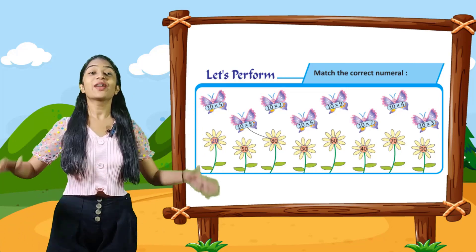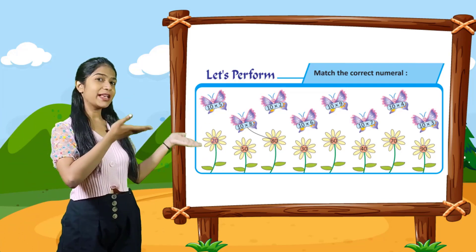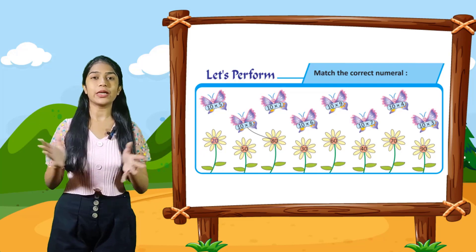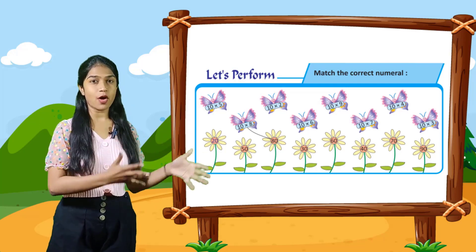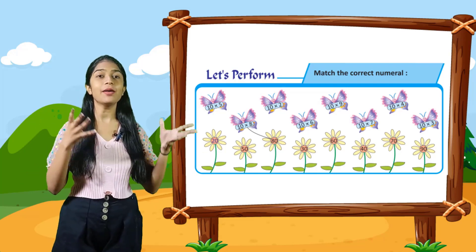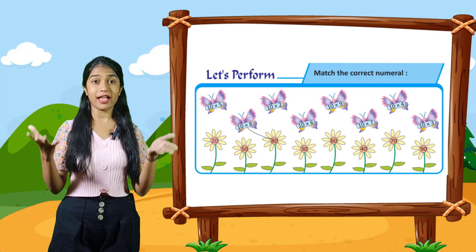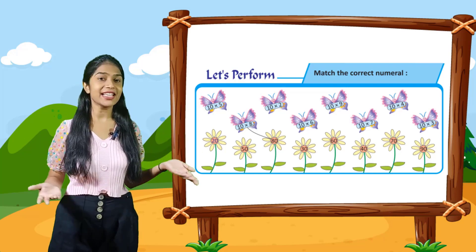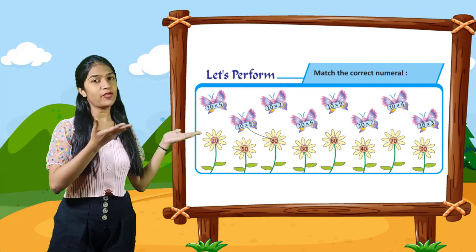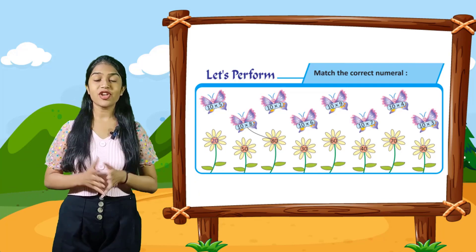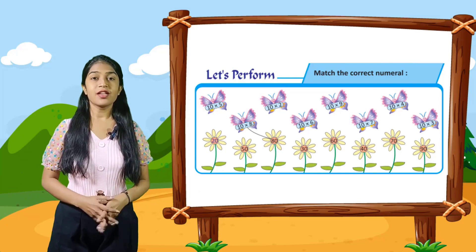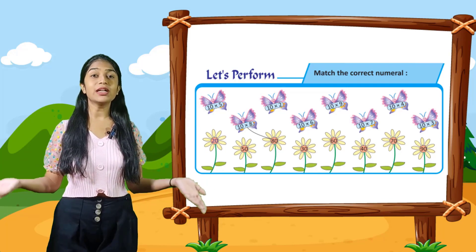So kids, here you can see the multiplication chart of 11 to 20. Here are some packet boxes given to you and you have to fill the boxes. For example, 11 into 5 is 55, so here you have to fill in 55. Rest you have to do yourself.